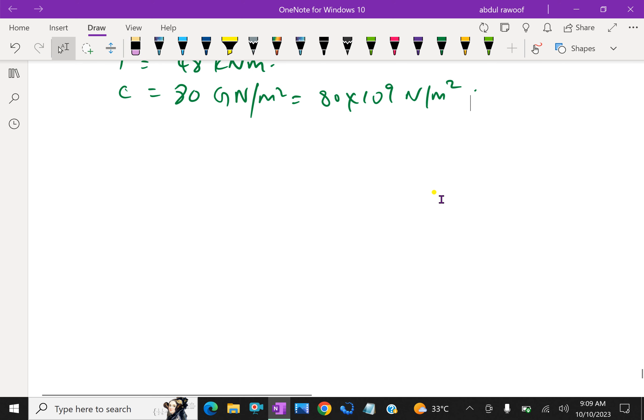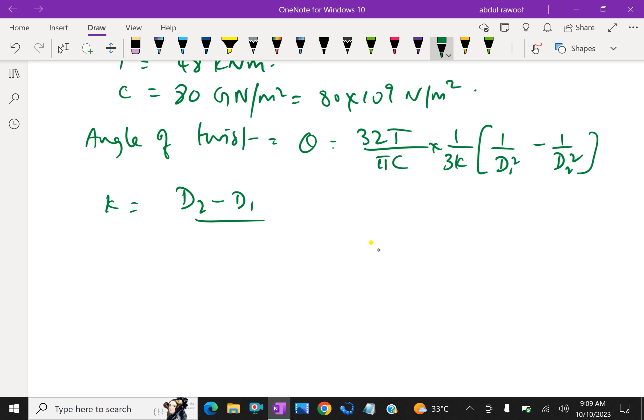First, angle of twist. The formula for tapering shaft is theta equals 32T over πC times (1 over D1 squared minus 1 over D2 squared), where K equals (D2 minus D1) over L.